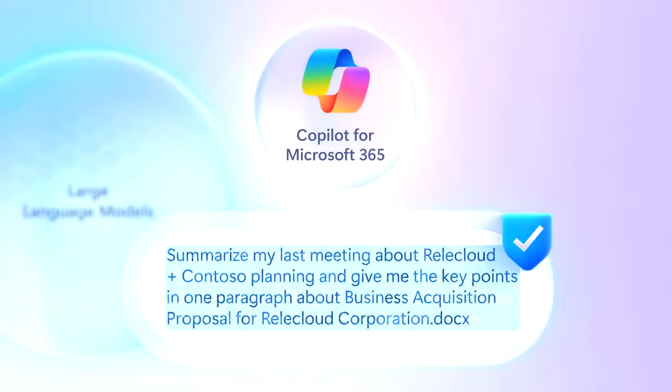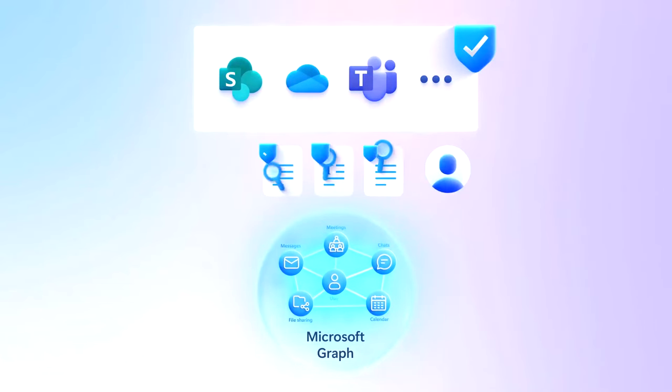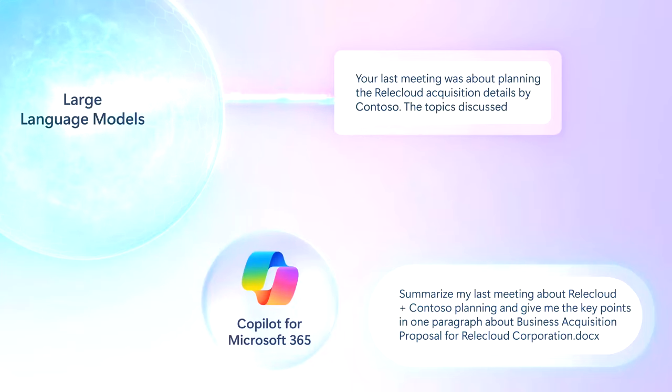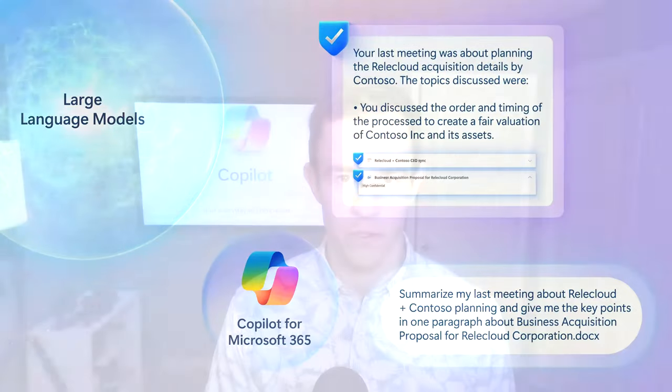When we think about data privacy concerns or access to confidential information, we want to make sure we have protections in place so that users aren't getting inadvertent access to sensitive information they shouldn't have access to. Within the Copilot model, you want to have these policies in place so it's doing checks and validating access for the user before generating the response, to make sure we're not leaking sensitive information to users who should not have access.